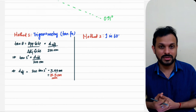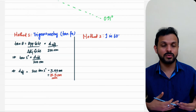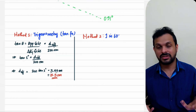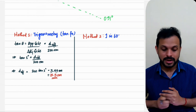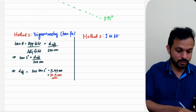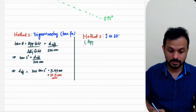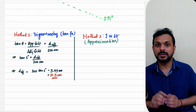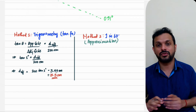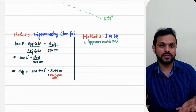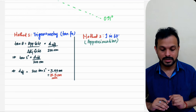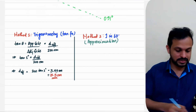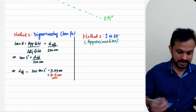If 1-in-60 is not specifically required by the question, it's more appropriate to use basic trigonometry for right-angle triangle questions. If 1-in-60 is required, the question will tell you directly or indirectly. Also note that 1-in-60 is an approximation and breaks down above a track angle of about 20 degrees — so it's more accurate for smaller angles.